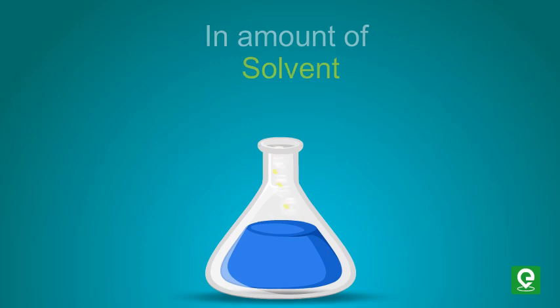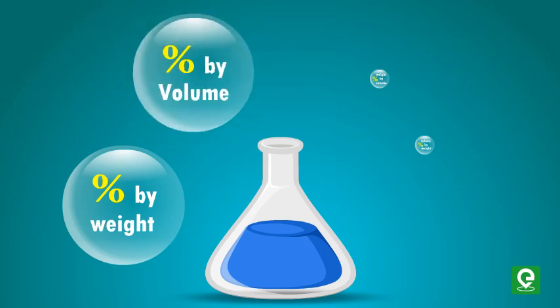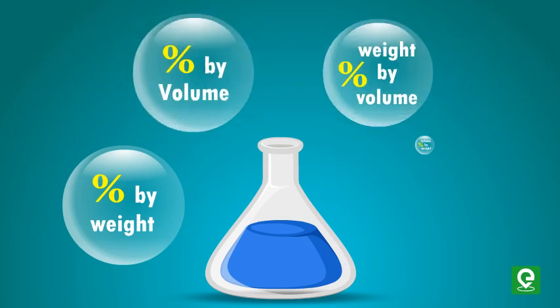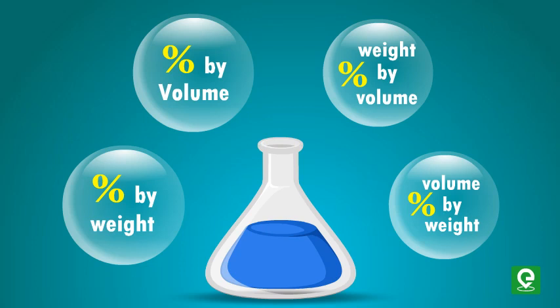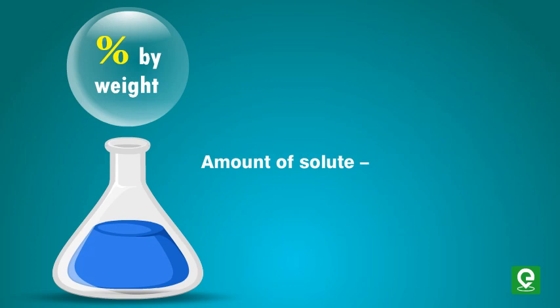Percent by weight, percent by volume, percent weight by volume, percent volume by weight. Percent by weight: if we add certain amount of solute per hundred gram of solution, it is expressed as percentage by weight.